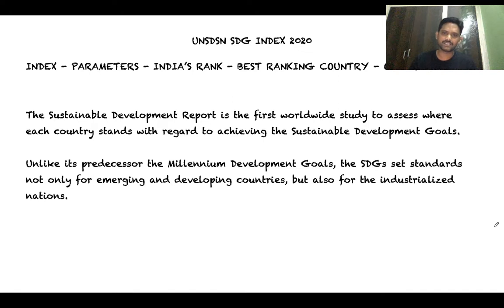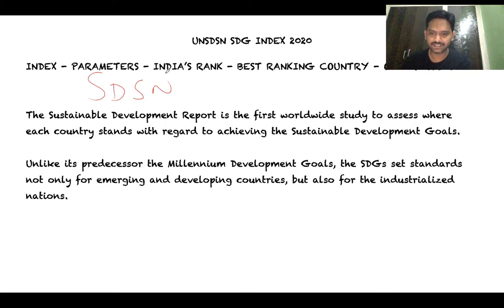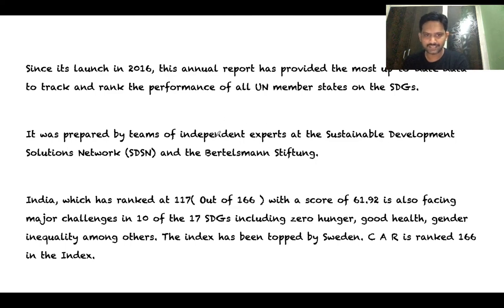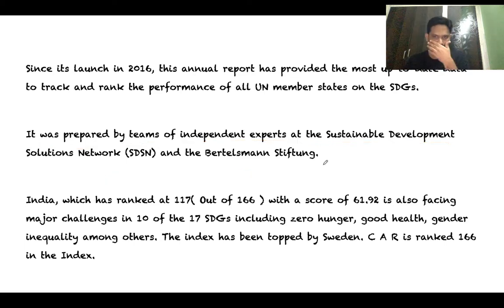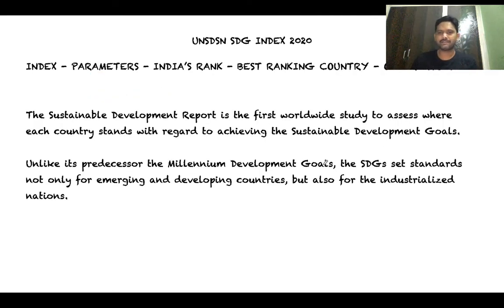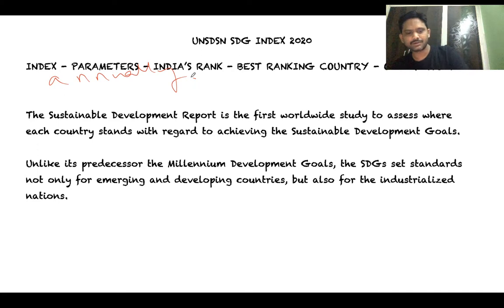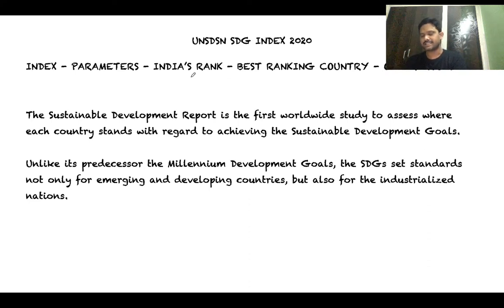The Sustainable Development Goals Index is released by the Sustainable Development Solutions Network and the Bertelsmann Stiftung. It is prepared annually and is the first worldwide study to assess where each country stands in achieving the Sustainable Development Goals. The SDGs are a set of 17 goals and 169 targets adopted by the UN General Assembly in 2015, replacing the Millennium Development Goals which were adopted in 2000 and fulfilled by end of 2015.